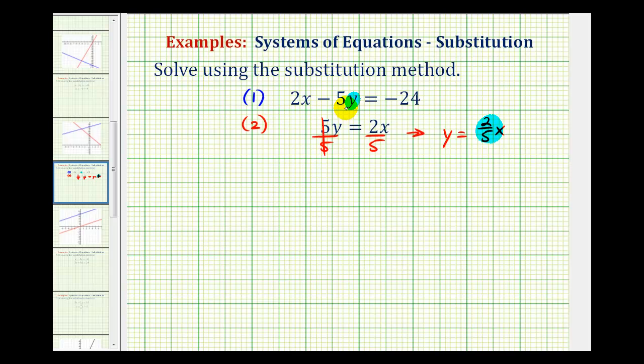And this will give us one equation with one variable. So by performing substitution into equation one, we would have 2x minus five times y, but y is equal to two-fifths x, equals negative twenty-four.